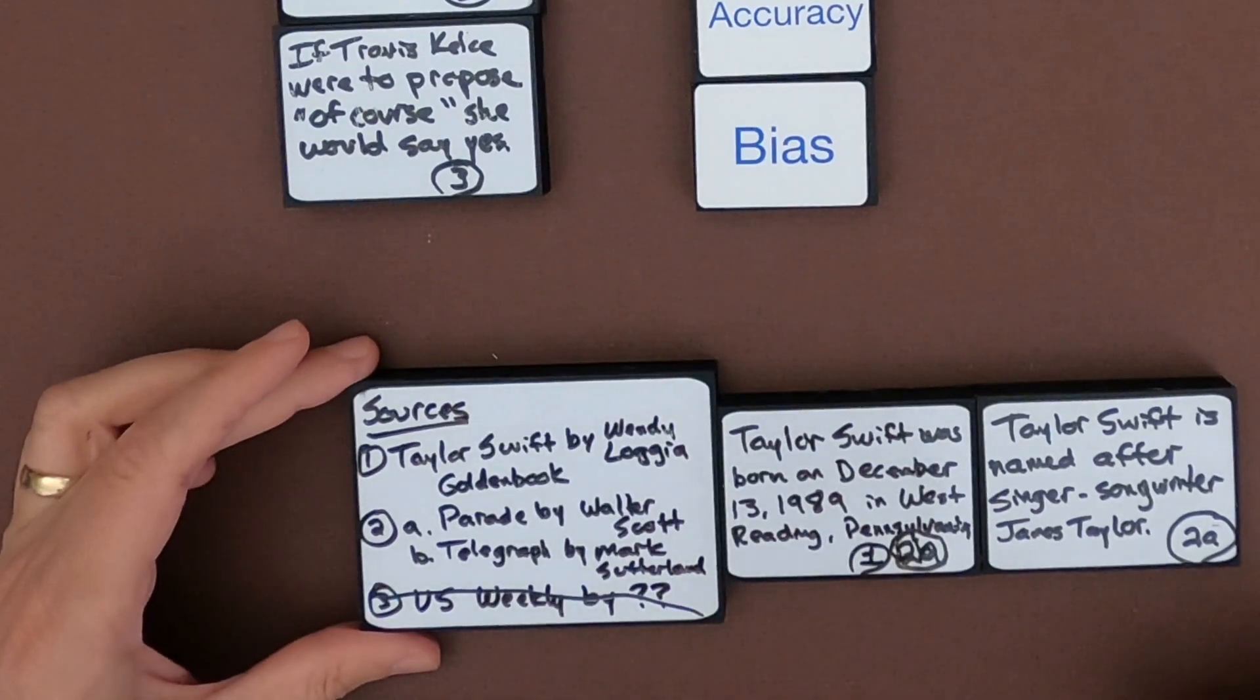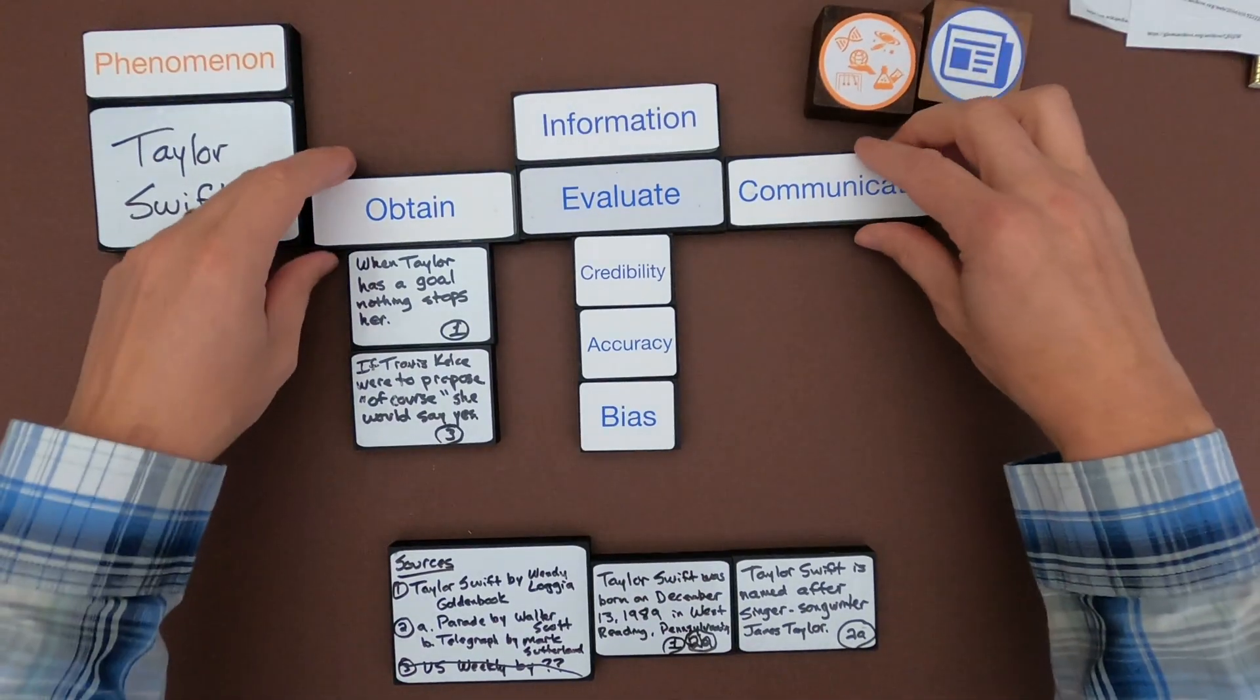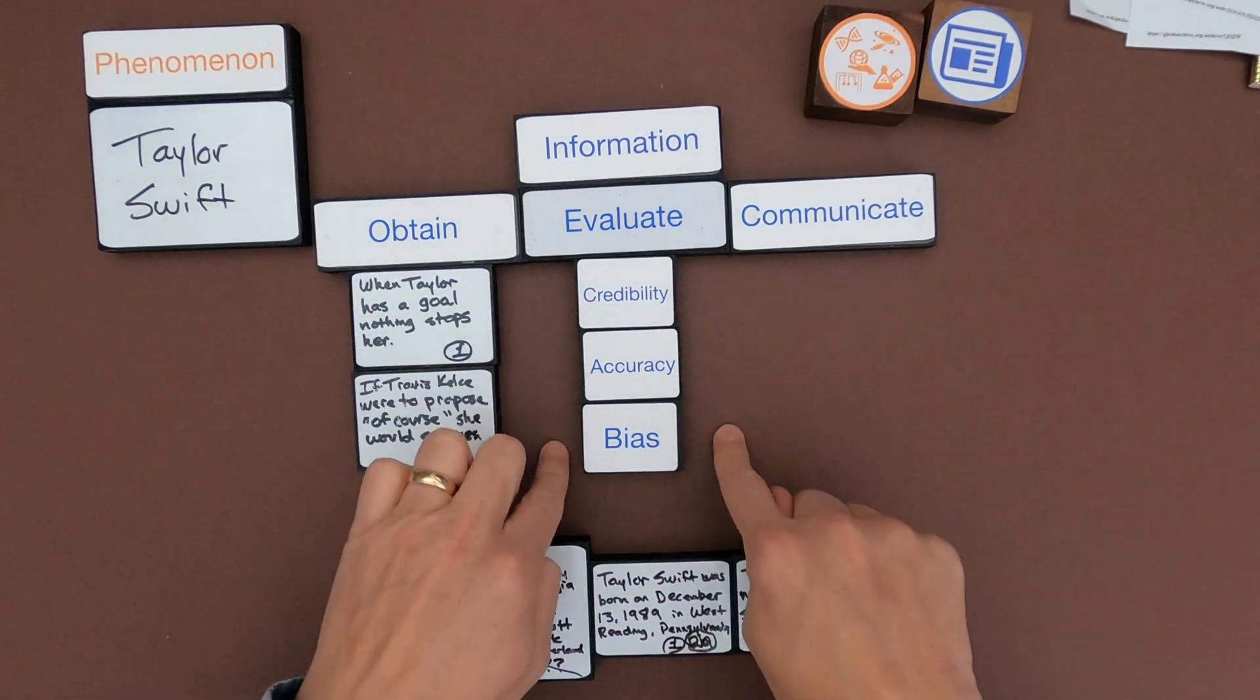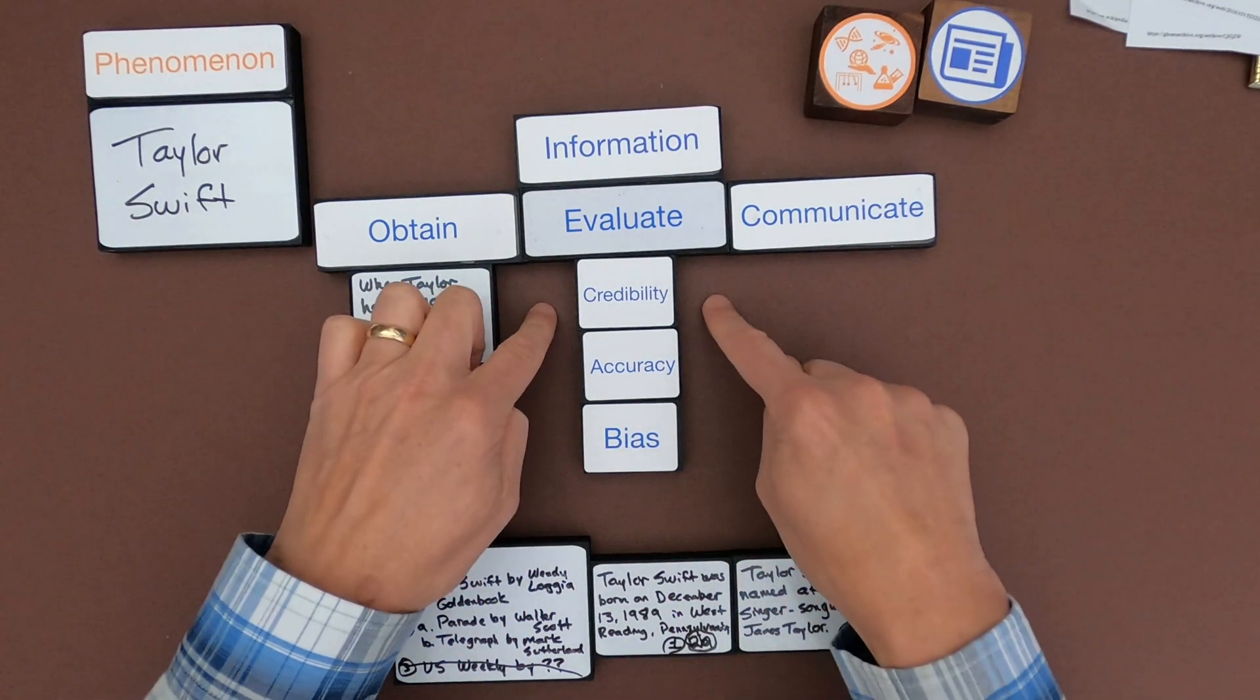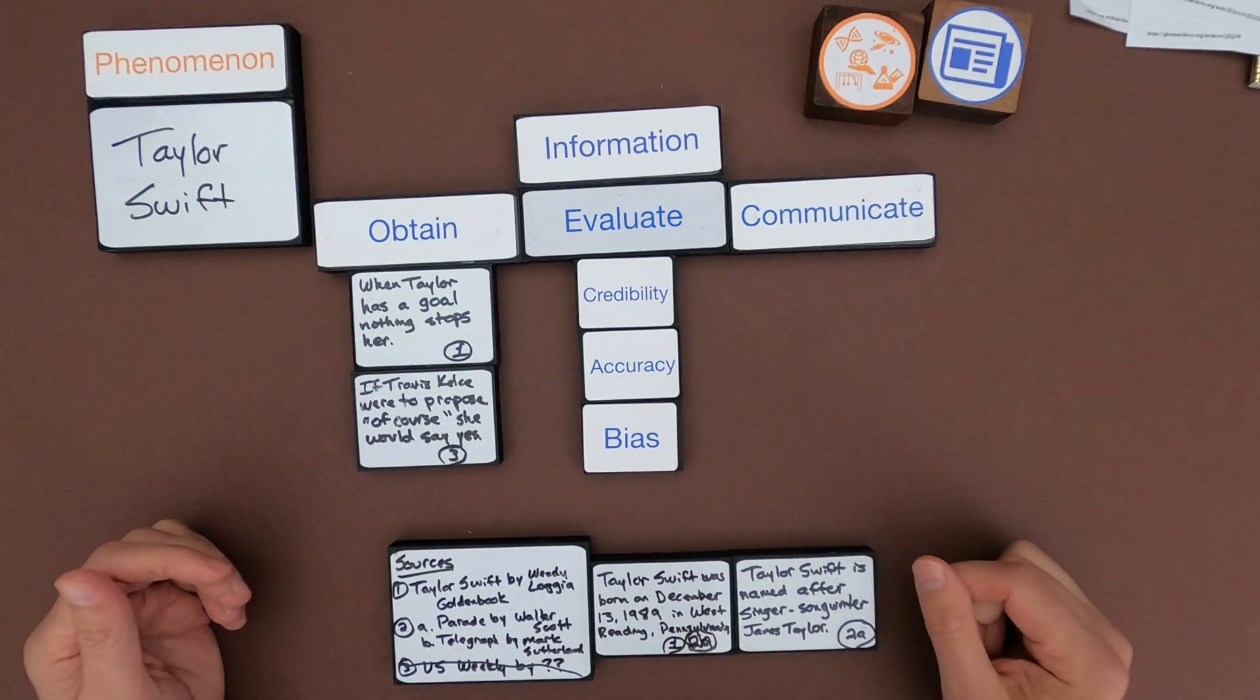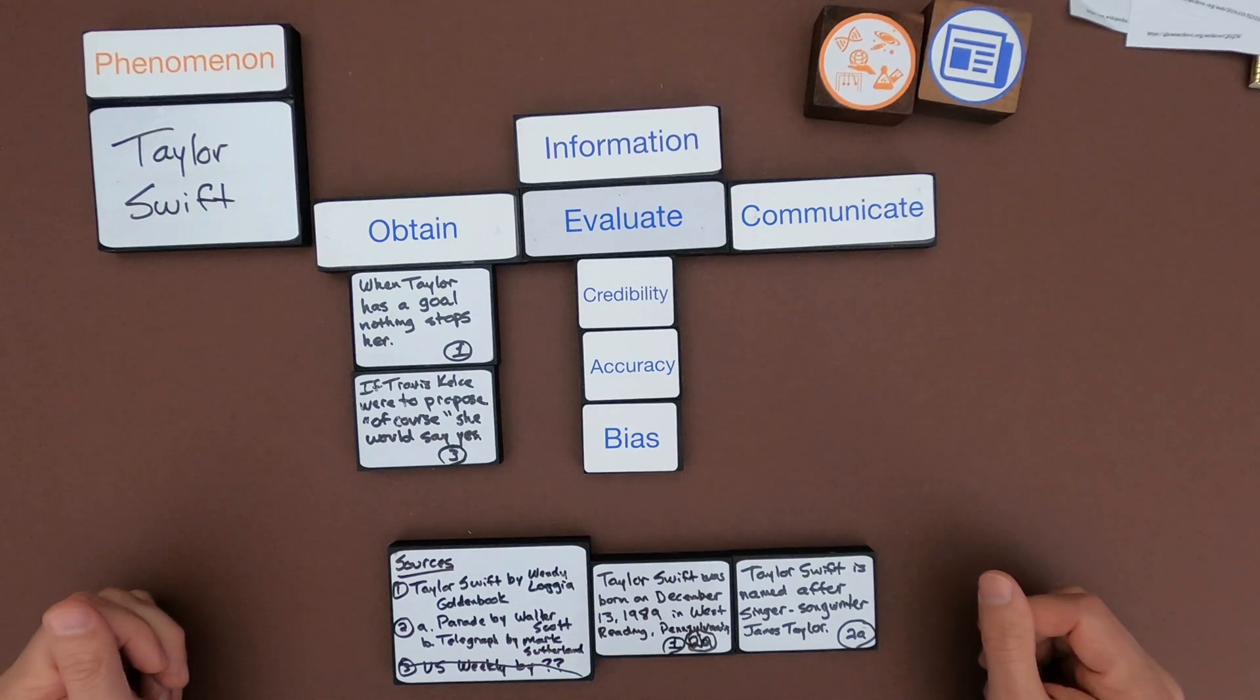And so what am I doing now? I'm integrating that information and then sharing that information. What's the most important thing you want to do as you go through that is never communicate information that you haven't gone through this checklist. Think about the credibility of the source. Have they been accurate in the past? And did they have any kind of a bias? And so what I'm going to do is clean this up. And then you'll have a chance to do the same thing with a different topic.